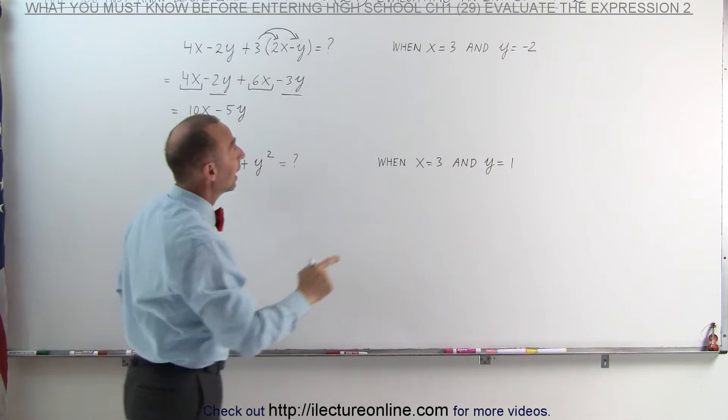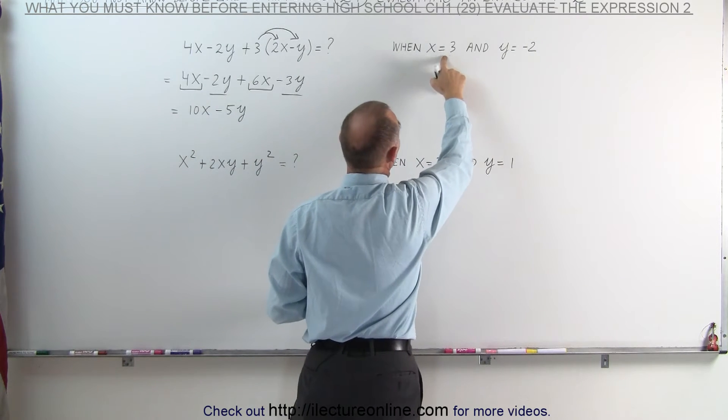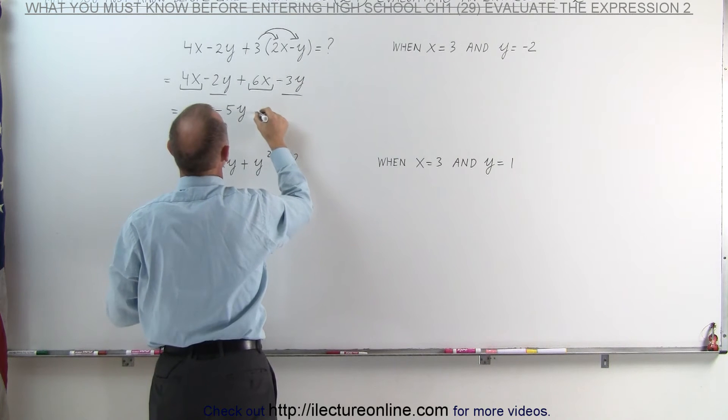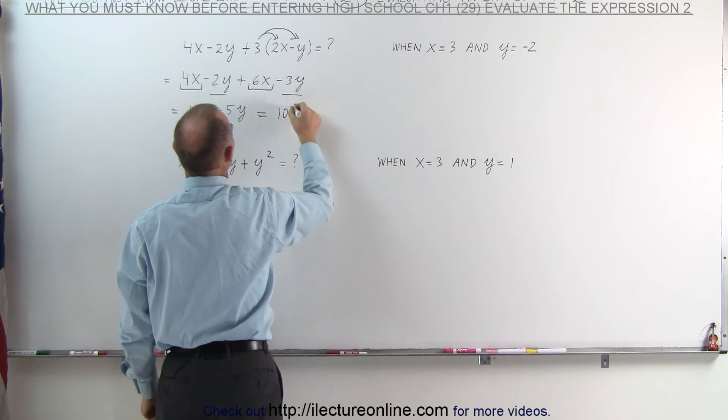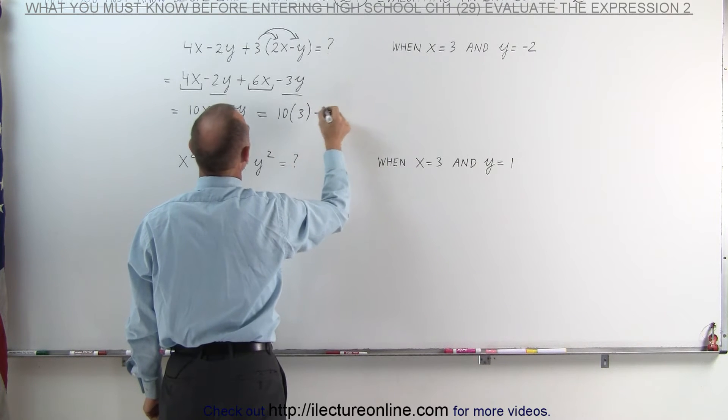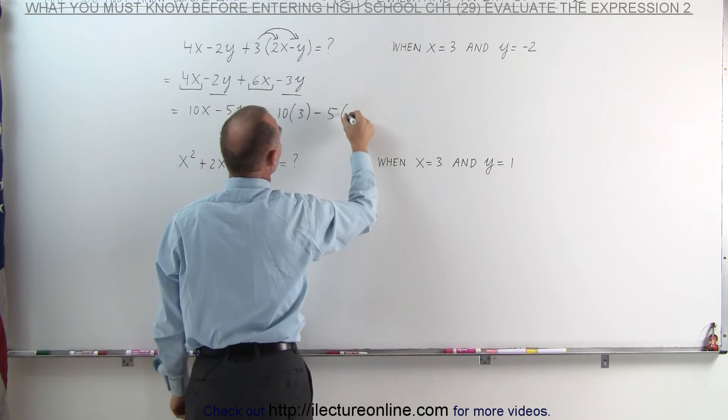And now when x equals 3 and y equals negative 2, we're going to plug those values into our two unknowns. This becomes 10 times 3 minus 5 times negative 2.